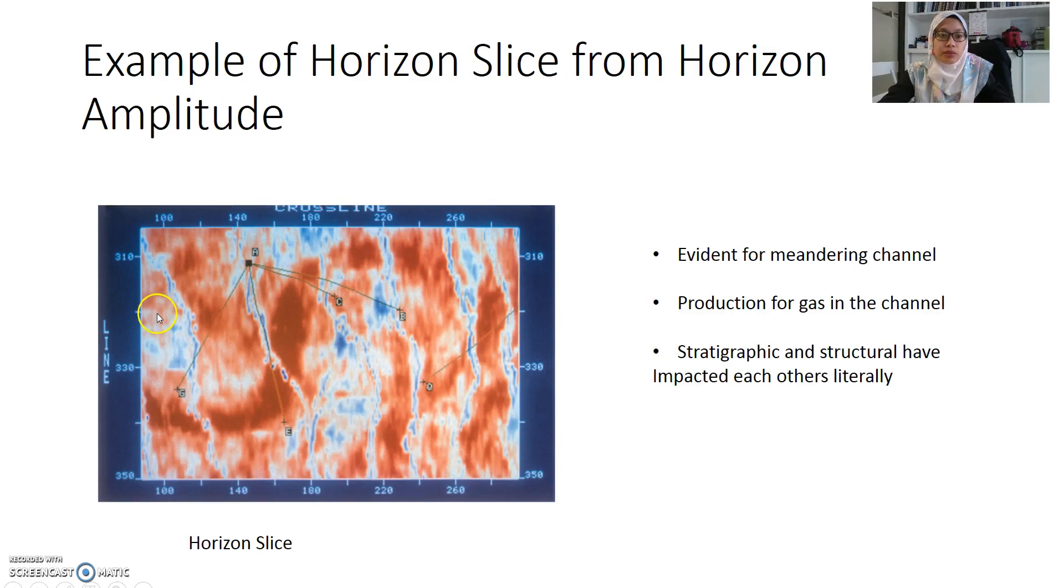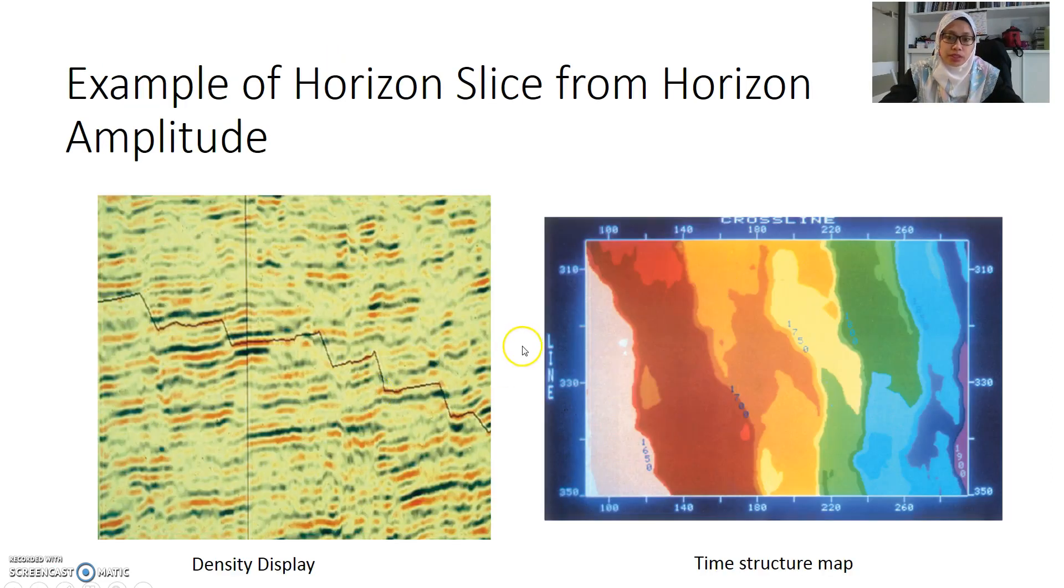Apart from that, we can also use horizon slices to evidence rendering channels. This is examples of different amplitudes in different rendering channels. This is actually a production gas inside the channel. The A, B, C, the alphabets are showing production zones. This is actually stratigraphic and structurally impacted as the channels are actually flowing based on a faulted block, which is these faulted blocks.